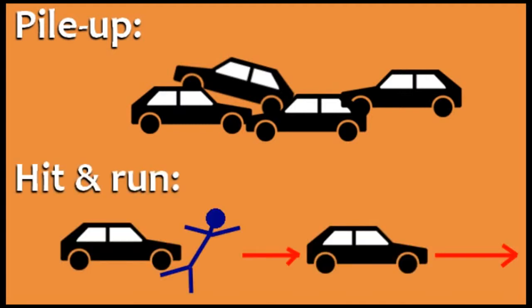Sometimes a car hits a person, but instead of stopping, the driver of the car drives away. This type of accident is called a hit-and-run.